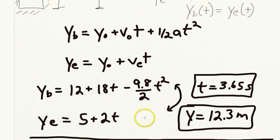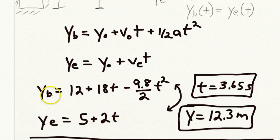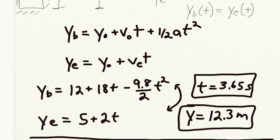Setting the two equations equal: 12 + 18t − 4.9t² = 5 + 2t. Solving this quadratic gives t equals 3.65 seconds. Once we have that, we plug 3.65 seconds back into either equation — since they're equal at that time — and we get y equals 12.3 meters. So the ball struck the elevator at 3.65 seconds after the start, when the elevator was at 12.3 meters above the bottom of the shaft.